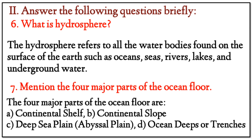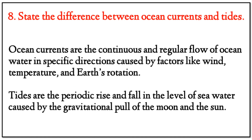Question 7: Mention the four major parts of the ocean floor. Answer: The four major parts of the ocean floor are: first, continental shelf; second, continental slope; third, deep sea plain; and fourth, ocean deeps or trenches.